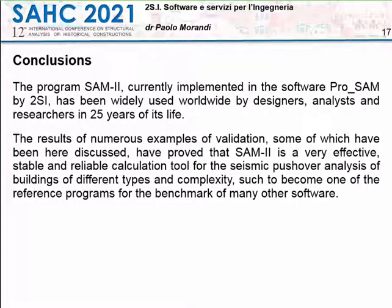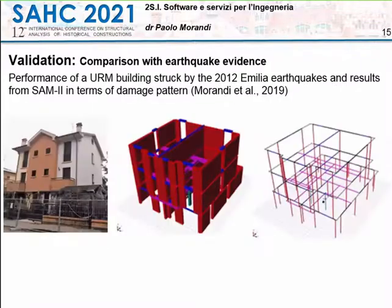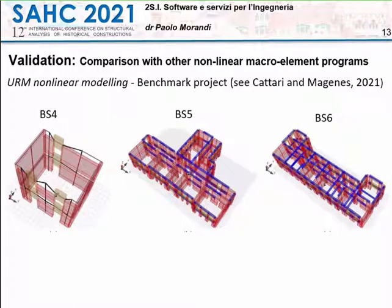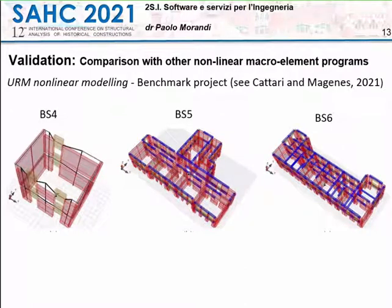It depends a lot on the number of masonry elements included in the building. For small buildings like those shown in the benchmark program — for example, BS5 or BS6 — the time is about one to two minutes per analysis. For a batch of 16 analyses, the total time is less than half an hour. Of course, as building size and number of elements increase, analysis time increases slightly, but the time remains more or less in this range of a few minutes per analysis.